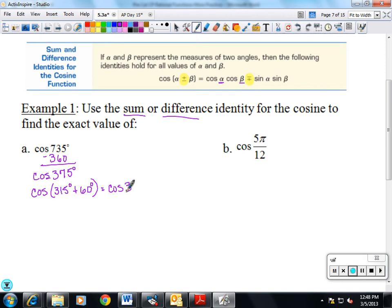So it's going to be cosine of 315 cosine of 60. This is a plus, so this is going to be a minus, sine of 315 sine of 60.